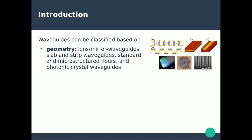Waveguides can be classified based on four different types of characteristics. The first is geometry: optical lenses and mirrors, stripes and slabs — two different types of materials where one sustains the electromagnetic radiation and the other confines it. There are also standard optical fibers, microstructured fibers, photonic crystals, and defect lines in photonic crystals, as introduced in chapter six, all of which serve as waveguides.